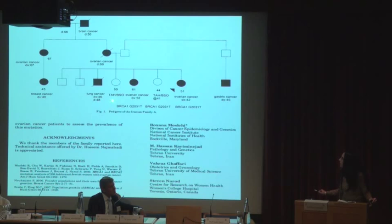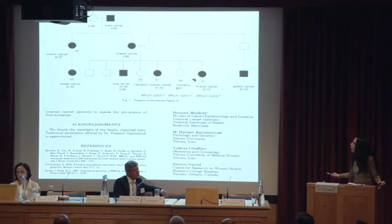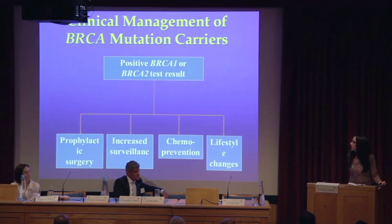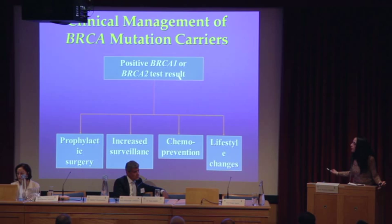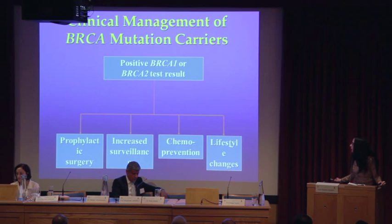This mutation leads to a truncated protein causing breast and ovarian cancer. Based on this finding, we can offer other unaffected individuals in this family genetic testing. Individuals found to be positive for BRCA mutations can be given several strategies for reducing risk, including lifestyle changes, chemoprevention, increased surveillance for breast and ovarian cancer, as well as prophylactic mastectomy or oophorectomy — that is, removal of the breast and ovaries in order to reduce the risk.